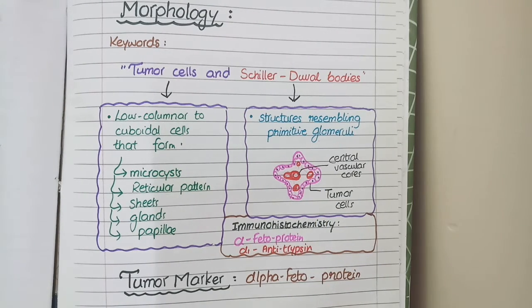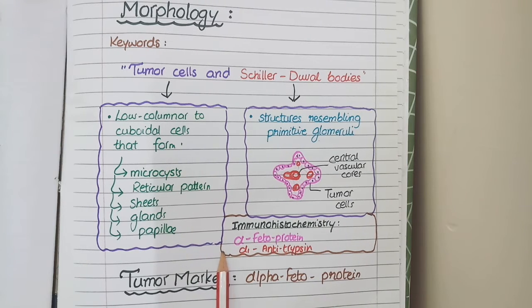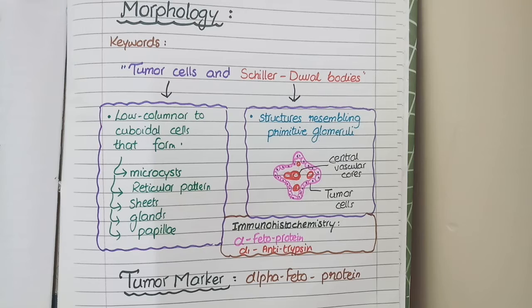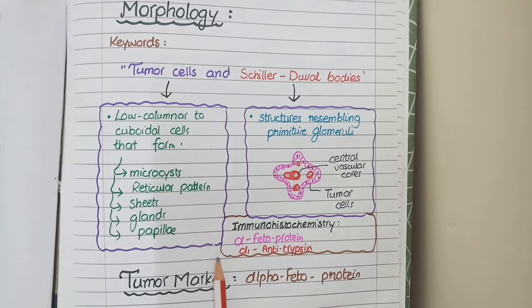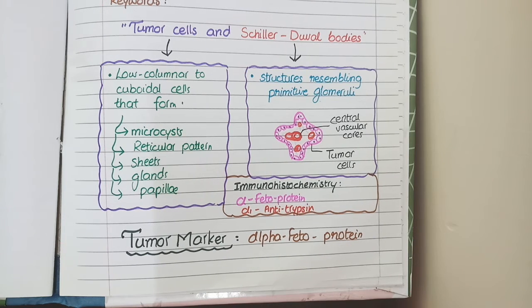Yolk sac tumor cells are positive for immunohistochemical stains for alpha-fetoprotein and alpha-1-antitrypsin. Overall, you see low cuboidal to columnar cells forming microcysts, reticulum, sheets, glands, and papilla; most tumors contain Schiller-Duval bodies lined by low columnar or cuboidal epithelial tumor cells with vascular cores. The tumor marker for yolk sac tumors is alpha-fetoprotein, detectable both by immunohistochemical staining of tumor cells and biochemical assays in blood.